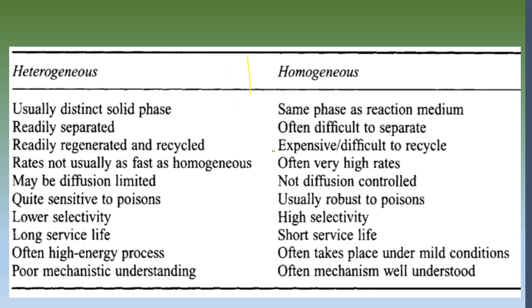There are different types of catalysts. A catalyst could be of the same phase as the reaction medium — that is homogeneous — or of a different phase — that is heterogeneous. For example, if the reaction medium is liquid and the catalyst is also liquid, that is homogeneous. If you are using a solid catalyst in a liquid medium, that is heterogeneous. When phases are different, you can readily separate the catalyst from the reaction mixture.